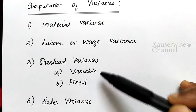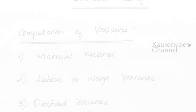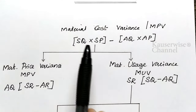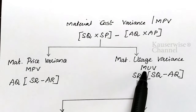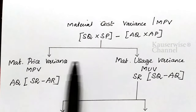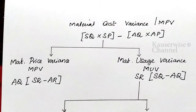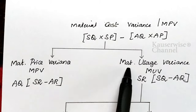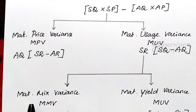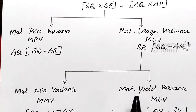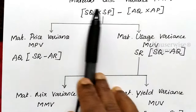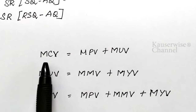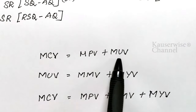Now let us see the problem for each head separately. First we are going to see material variances. Here is the diagrammatic representation of material variances. Material cost variance is divided into two major components: first, material price variance, and second, material usage variance. Material usage variance is further divided into two parts: material mix variance and material yield variance.